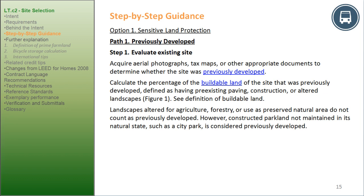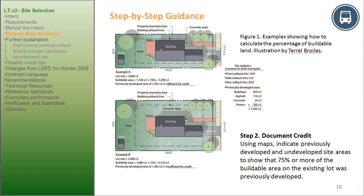Constructed parkland not maintained in its natural state, such as a city park, is considered previously developed. Figure 1 shows how to calculate the percentage of buildable land (illustration by Terrell Broilis). Step 2, Document Credit: using maps, indicate previously developed and undeveloped site areas to show that 75% or more of the buildable area on the existing land was previously developed.